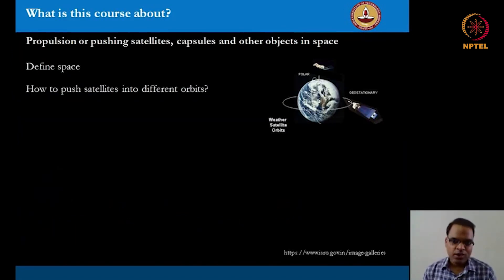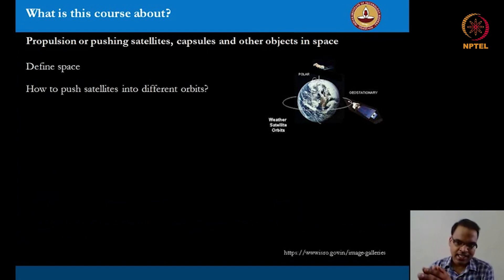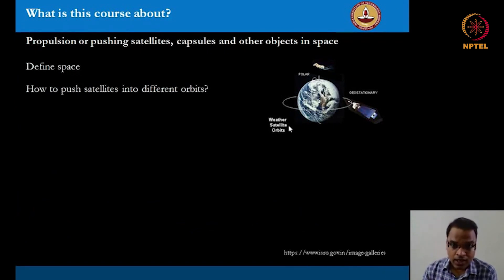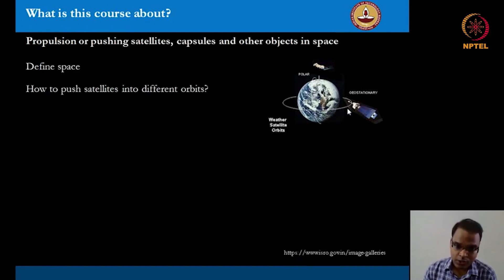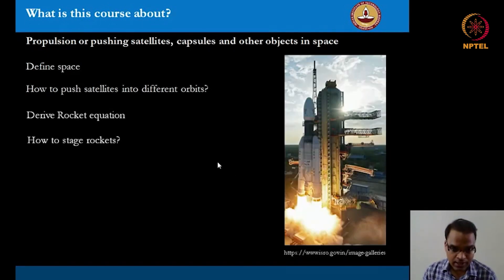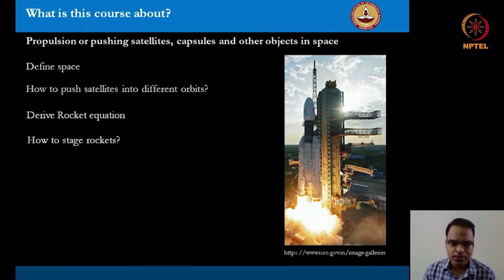As the title of the course suggests, rocket propulsion concerns propelling or pushing satellites, space capsules, and other objects in space. We will therefore define what space is and then infer how to push these satellites into different orbits around celestial bodies. Subsequently, we will derive the rocket equation and then go into the details of how to stage the rockets and also discuss why we have to stage them.